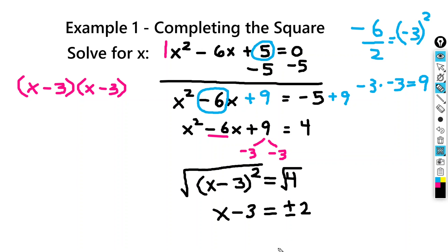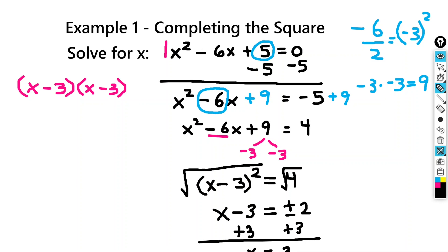So our next step, we want to solve for x. We've got to get rid of the minus 3 by adding it to both sides of the equation. So if we do that, we get x equals 3 plus or minus 2.